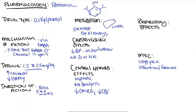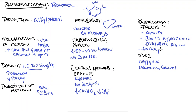Third, the respiratory system. Large bolus doses of propofol can lead to apnea, making it a respiratory depressant. It also blunts the body's response to hypoxia and hypercarbia — normally, your body ramps up minute ventilation to blow off CO2 or increase oxygen intake, but propofol blunts this response. Additionally, propofol decreases airway reflexes, which is important during laryngoscopy, and it causes bronchial relaxation.